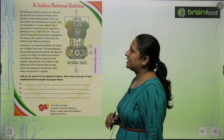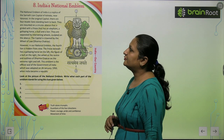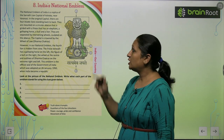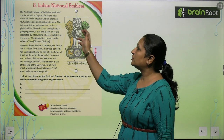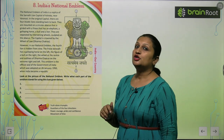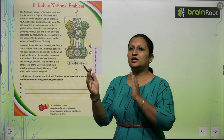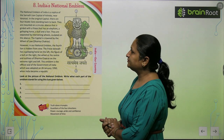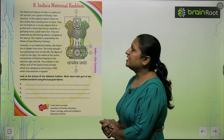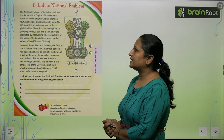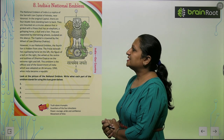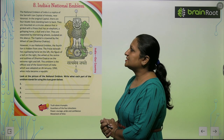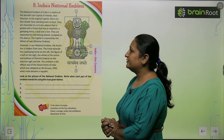In the original capital, there are 4 Asiatic lions standing back to back. They are mounted on a circular abacus that is girded with a frieze.